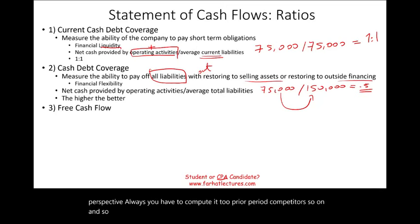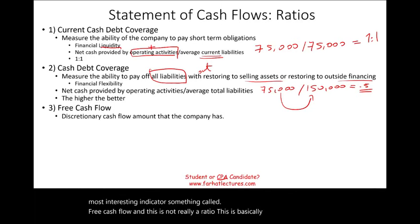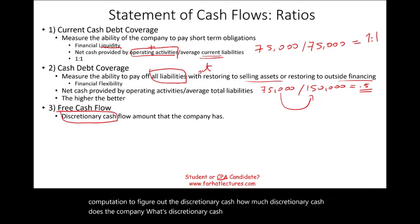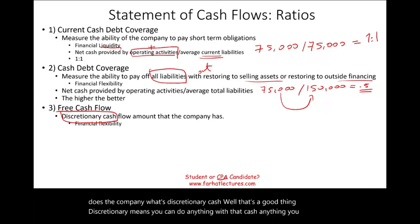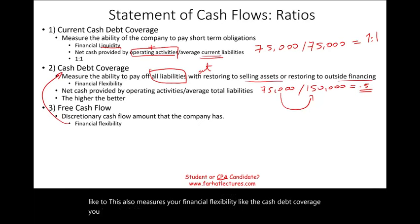The most interesting indicator is something called free cash flow. This is not really a ratio — it's a computation to figure out the discretionary cash a company has. Discretionary means you can do anything with that cash, anything you'd like. Free cash flow also measures financial flexibility, similar to the cash-debt coverage.